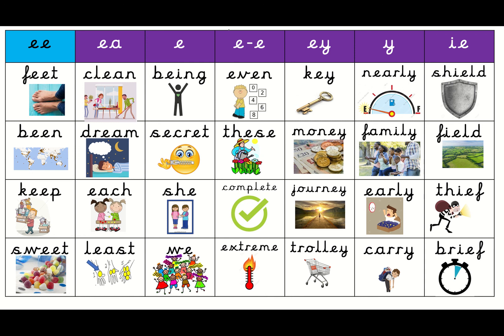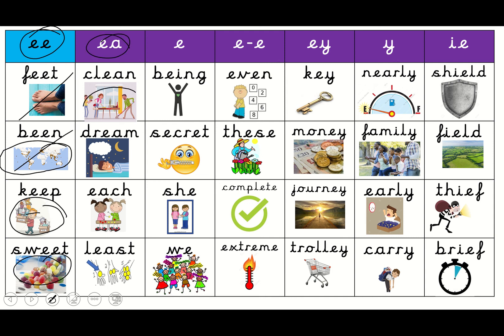We're going to go to this column first. What's this word? Feet. What's the one underneath? Bean — and the picture is like, where have you been on the planet? And the next one — keep. Can you see? He's keeping all of his things. And what's the bottom one? Sweet. Well done. They all have the EE sound.